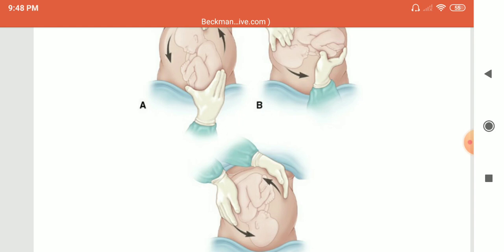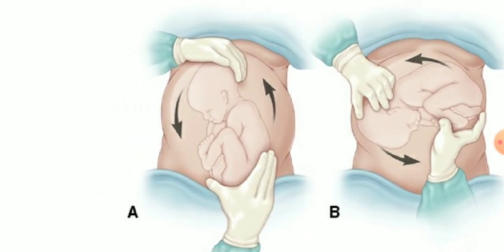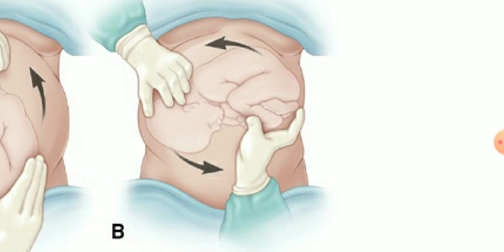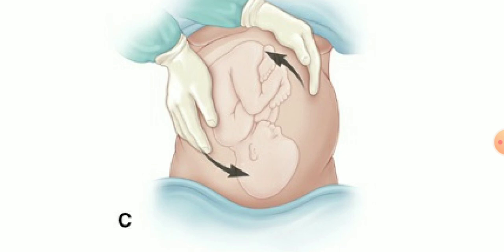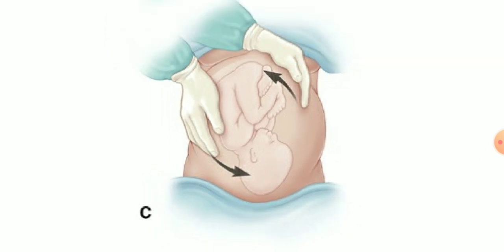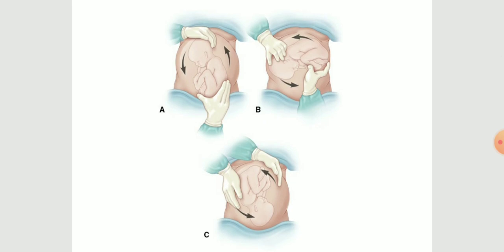Looking at the diagram of the procedure: in the first image, one hand pushes the baby to the right side while the upper hand pulls the fetal head toward the left side. Next, the fetus is shown in transverse position. In the third image, a successful external cephalic version is shown, with the fetal head now downward and the caudal part upward — that is the vertex position — which facilitates normal delivery.